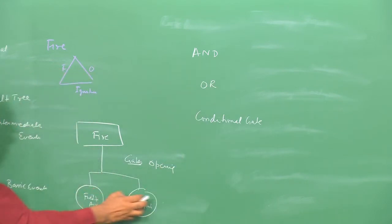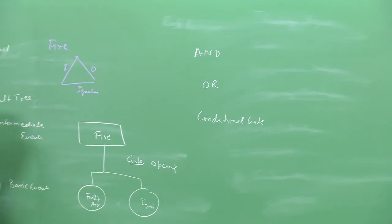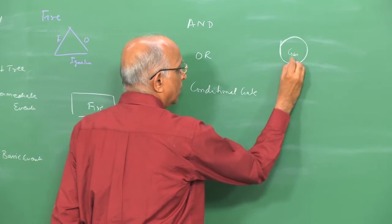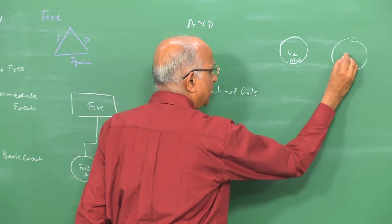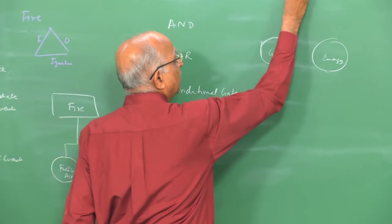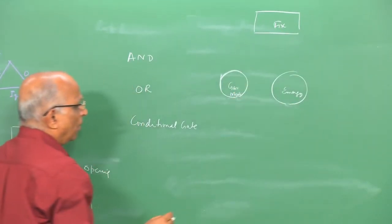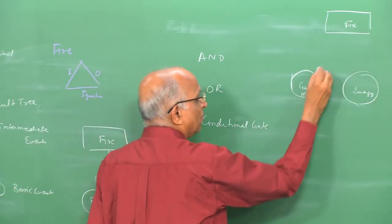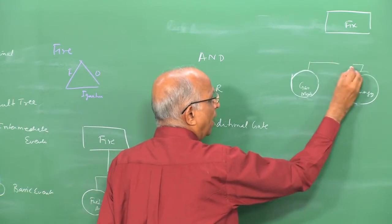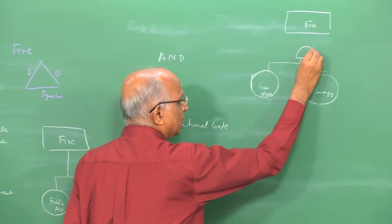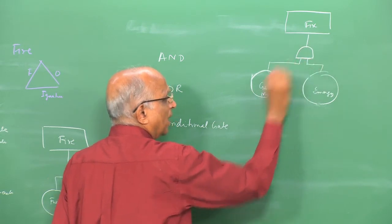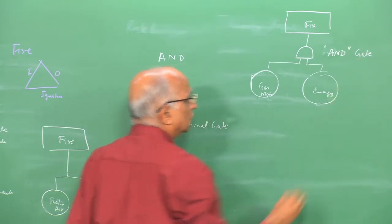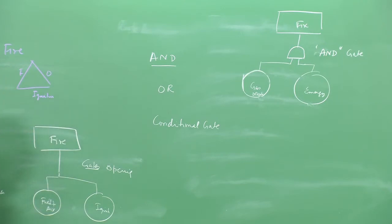To have a fire, we need a gas mixture available and ignition energy available — both are required together, just as in the fire triangle. Because both are required, we use an AND gate. The AND gate is represented by an ellipse with a curve. For an OR gate, consider forming an explosive cloud: either a vent valve mistakenly opens, or somebody tampers with the check valves — either one can result in cloud formation. The OR gate is represented in the shape of a fish.